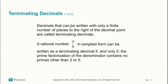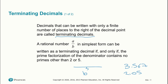Decimals that can be written with only a finite number of places to the right of the decimal point are called terminating decimals. Examples: 3.567, 2.05 — at some point they stop. A rational number a over b in simplest form can be written as a terminating decimal if and only if the prime factorization of the denominator contains no primes other than 2 or 5. If the denominator has any other prime factor, we won't be able to get 10 to a power in the denominator, and the decimal won't terminate.